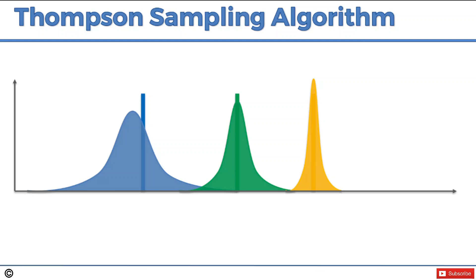That is pretty much how the Thompson sampling algorithm works. It is a probabilistic algorithm. Every time we generate these values, we create a hypothetical setup of the bandits, solve that, apply the results to the real world, and adjust our perception of reality based on the new information. In the next tutorial, we're going to compare the upper confidence bound and the Thompson sampling algorithm. Until next time, happy analyzing.